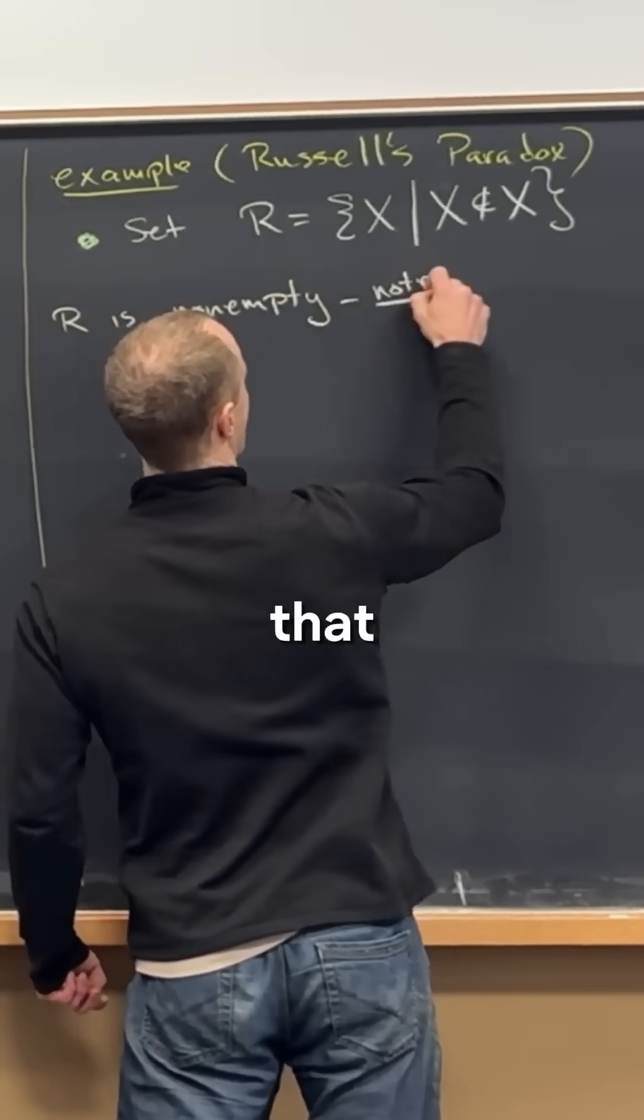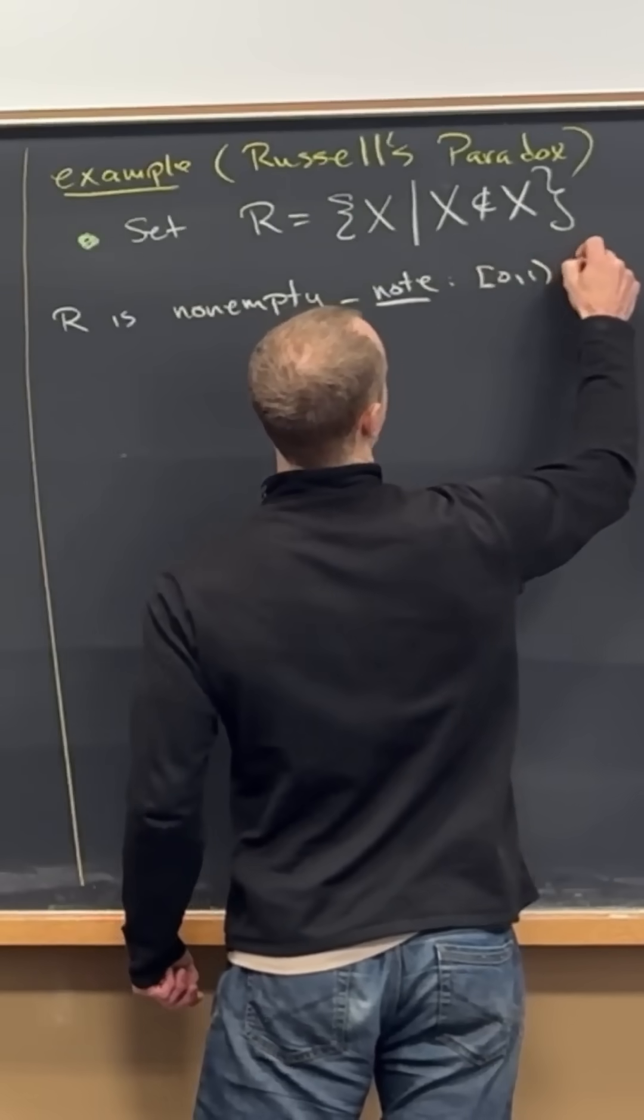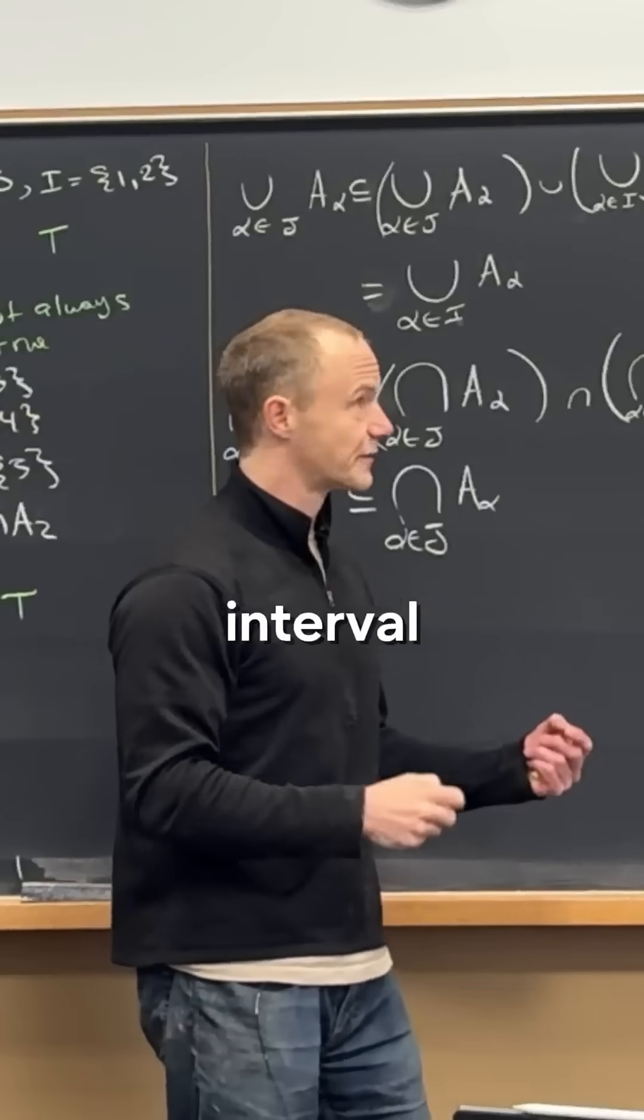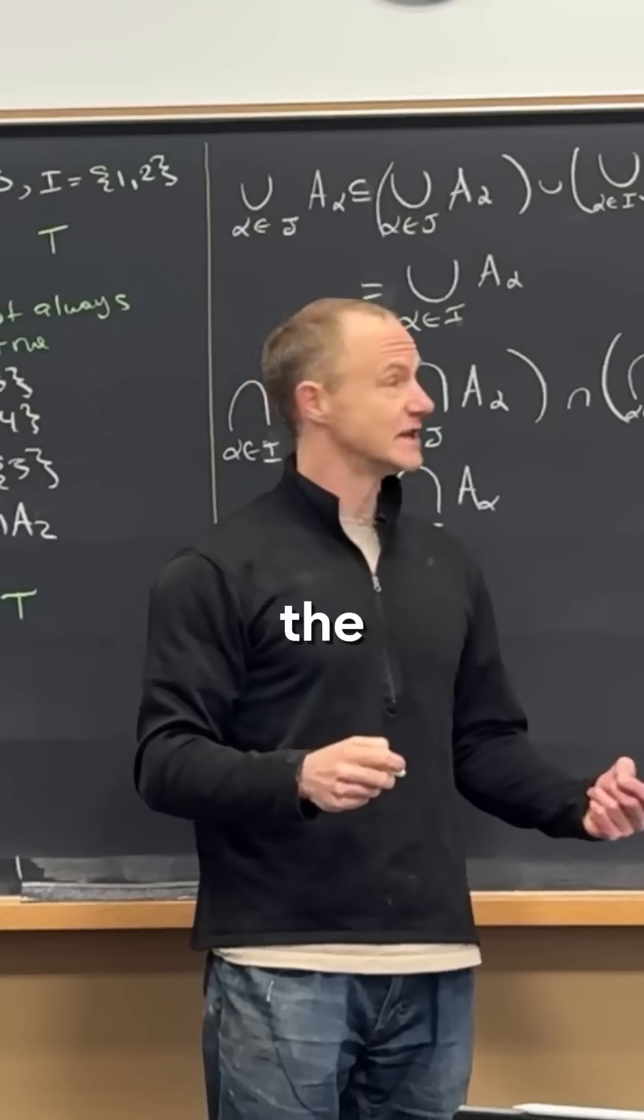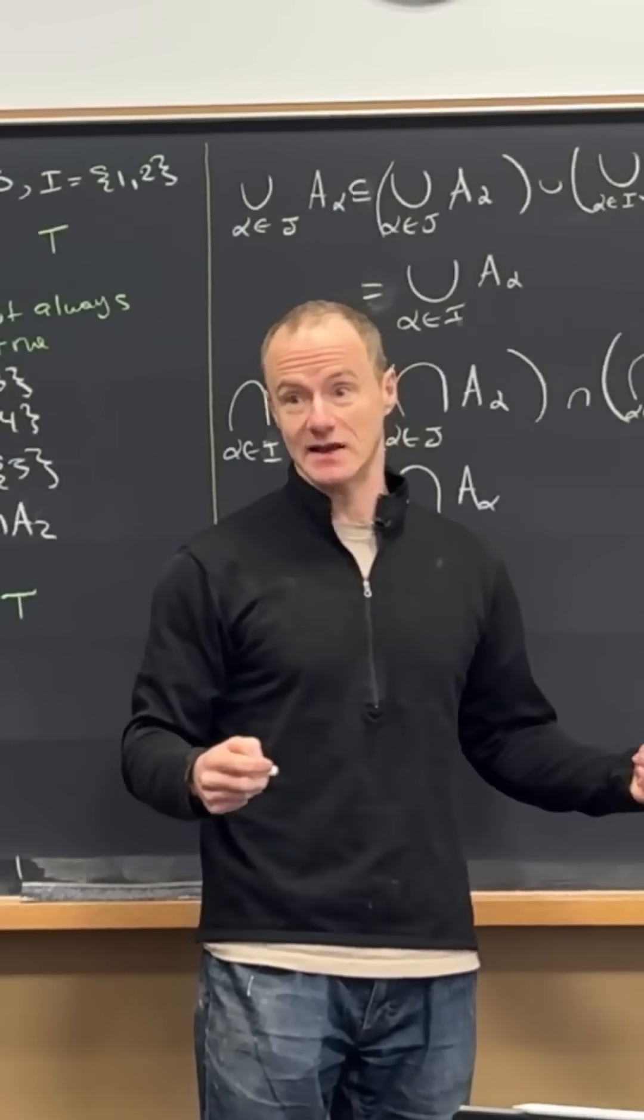Note that, for example, the interval from zero to one is an element of R, because the interval from zero to one does not contain itself as an element. The interval from zero to one only contains numbers as elements, can't contain a set as an element.